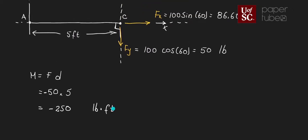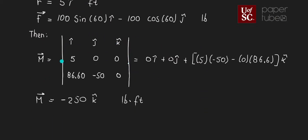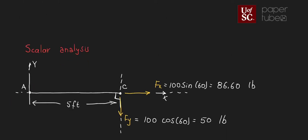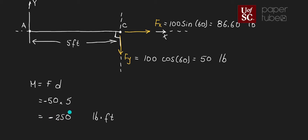Both methods give the same answer: -250 pound-feet. The scalar analysis requires more thinking about what's happening with signs and the right-hand rule, but the calculations are simpler. The vector analysis has the determinant which may look more complex, but the sign comes straight from the calculation without thinking about the right-hand rule. Eventually you'll get comfortable with both, though scalar analysis tends to be more popular in practice.